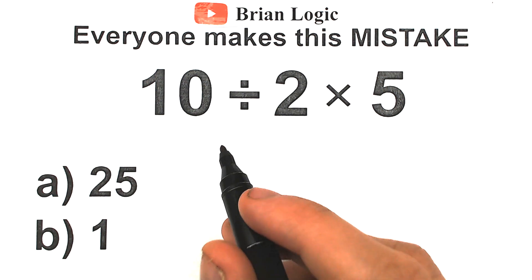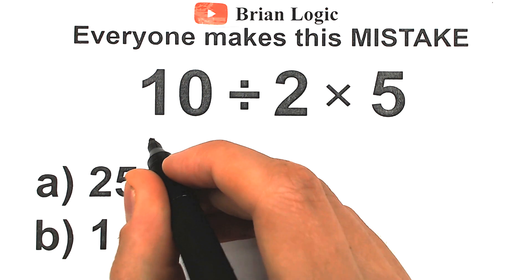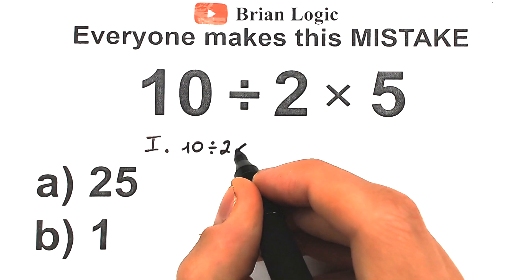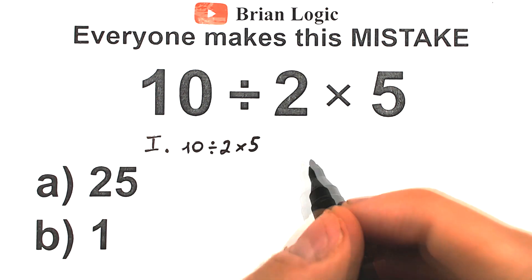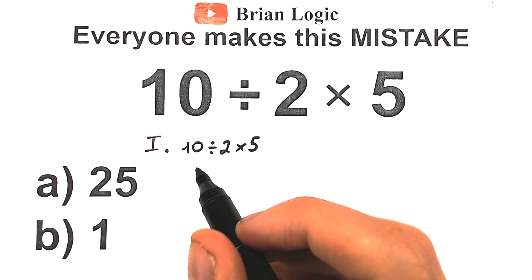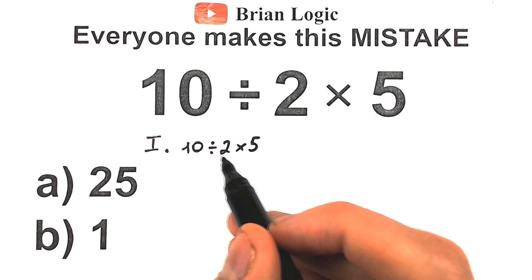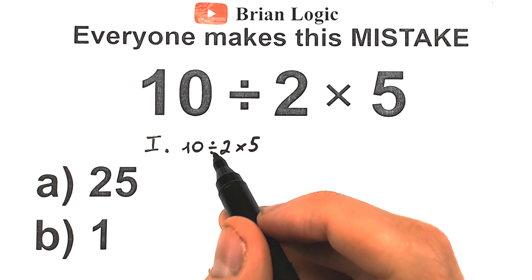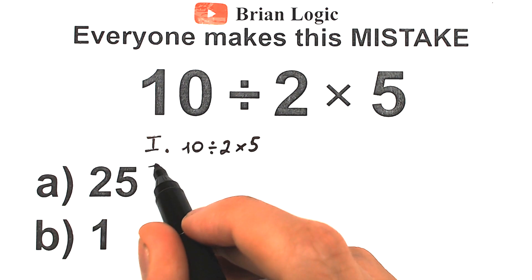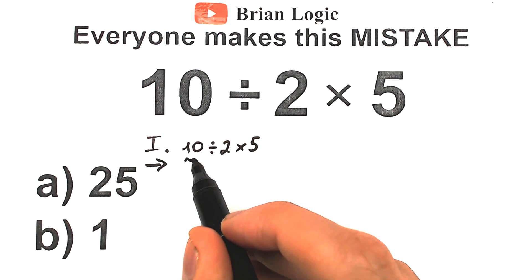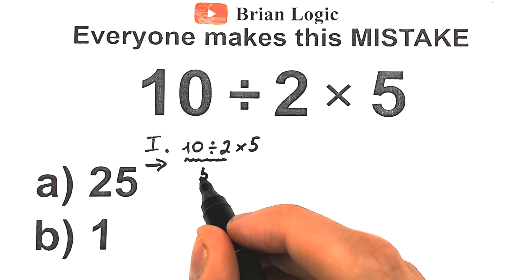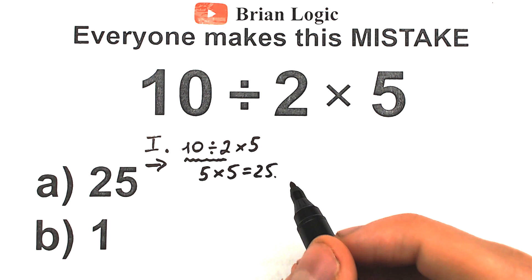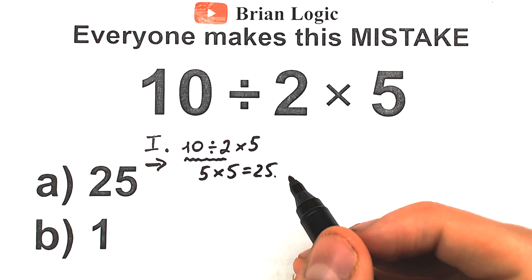There are two interpretations of this solution. I'm going to start with the first interpretation. We have 10 divided by 2, times 5. This interpretation is how calculators work nowadays. According to order of operations, division and multiplication have the same precedence, so the correct order is to evaluate from left to right. The first operation from left to right is division: 10 divided by 2 equals 5. Then we have 5 times 5, which equals 25. This is our first interpretation, giving us the correct answer of 25.